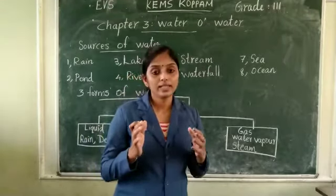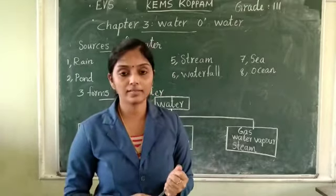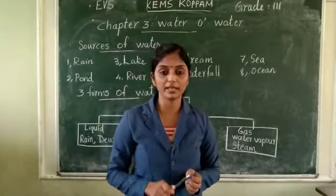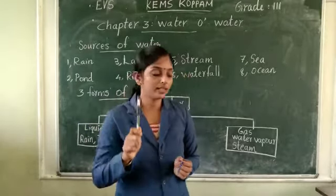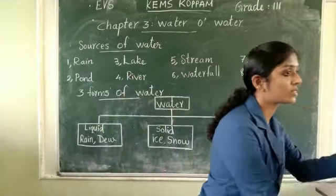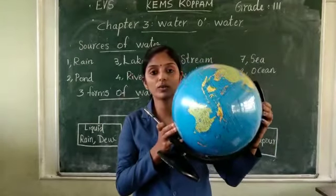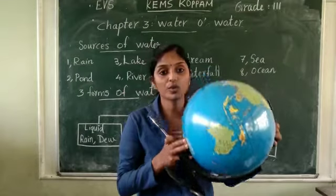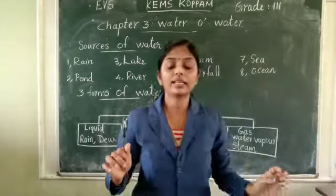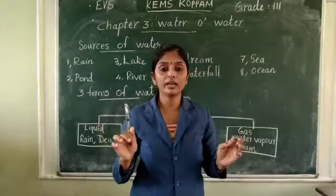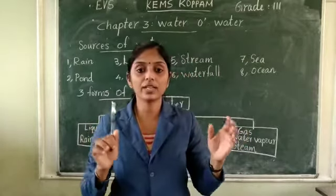And next, solid things. I will give you some examples — this pen is a solid thing and this globe is also a solid thing. Solid things have a definite shape.